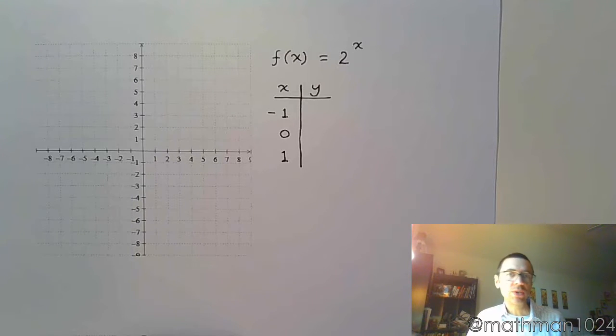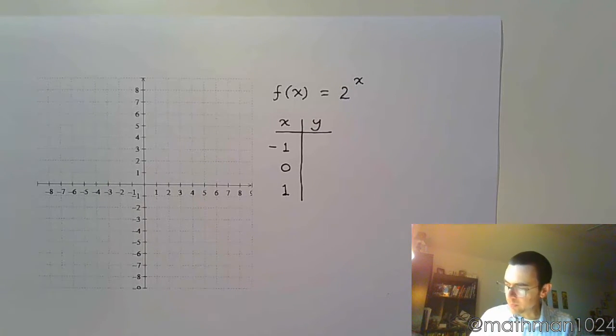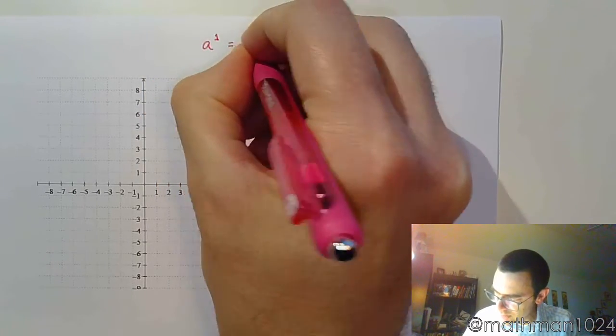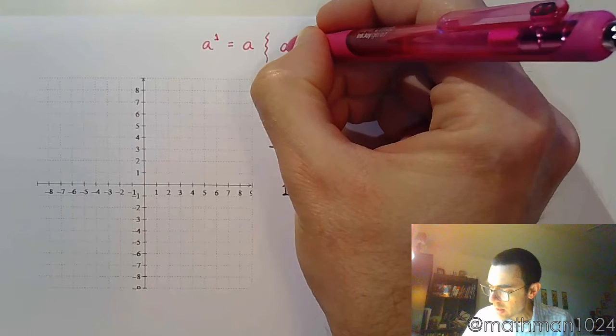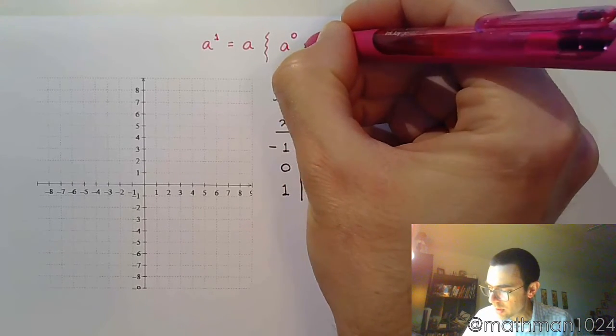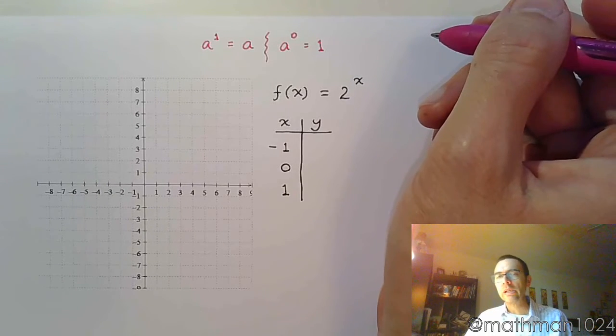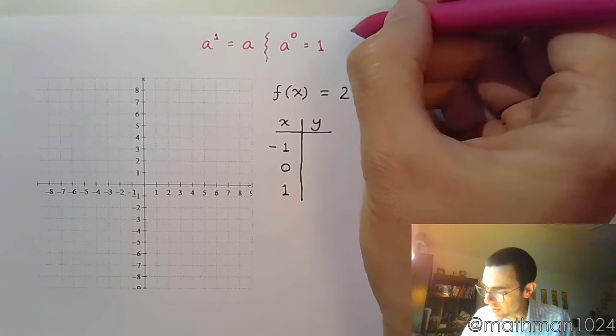In order to work with these, you need to know certain properties of exponents. So let me just remind you of a couple of those real quickly. Remember that anything to the first power is going to be itself. Anything to the 0 power is going to be 1, provided that your base is not 0. But of course, the definition for an exponential function has a base that's not equal to 0, so we should be fine there.